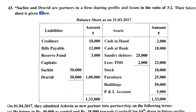Welcome back to the series on accountancy, chapter 3, admission of partner. In this video we are solving a simple problem. Sachin and Dravid are partners in the firm sharing profit and loss in the ratio of 3:2. This is important — remember this ratio, as we'll be needing it while solving the problem.